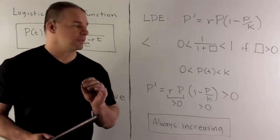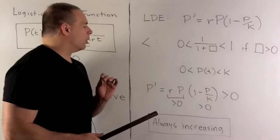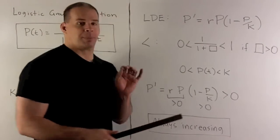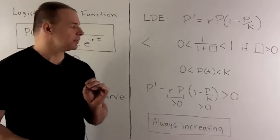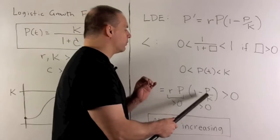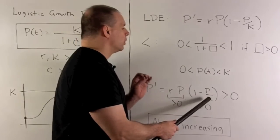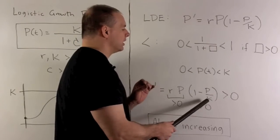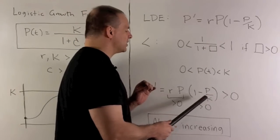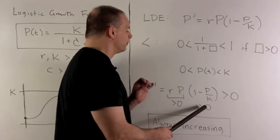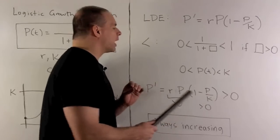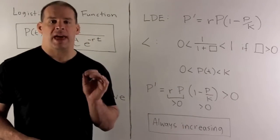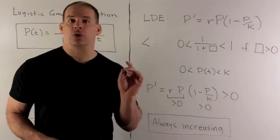Let's check our first derivative. R is positive, P is a population so that's always positive. One minus P over K — since P is less than K, this number is less than one, so one minus it is a positive number. Therefore P prime is always greater than zero, meaning P is always increasing.